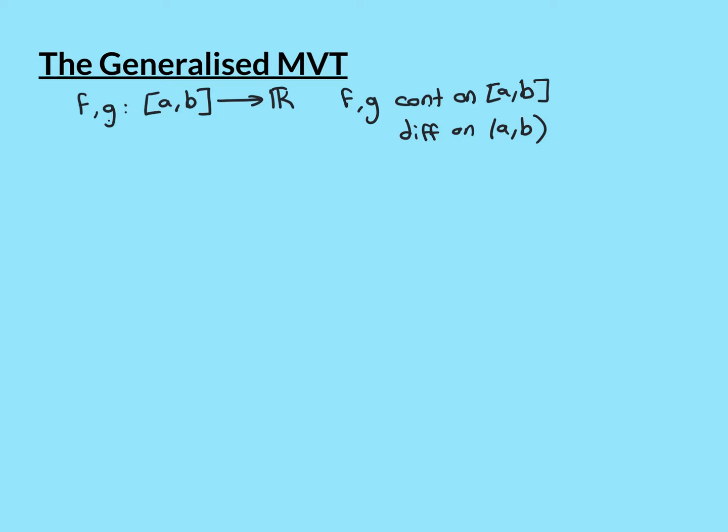Whilst the Mean Value Theorem is just about one function, the Generalized Mean Value Theorem is about two functions. We'll have two functions f and g, both real-valued functions defined on the closed bounded interval [a, b]. We're going to need them to be continuous on all points within the closed interval [a, b], and differentiable everywhere on the open interval (a, b), so everywhere apart from the two endpoints. These are the normal requirements to apply the Mean Value Theorem to both f and g.